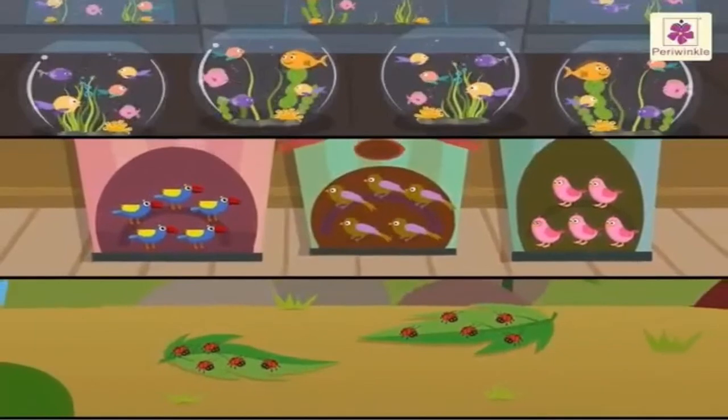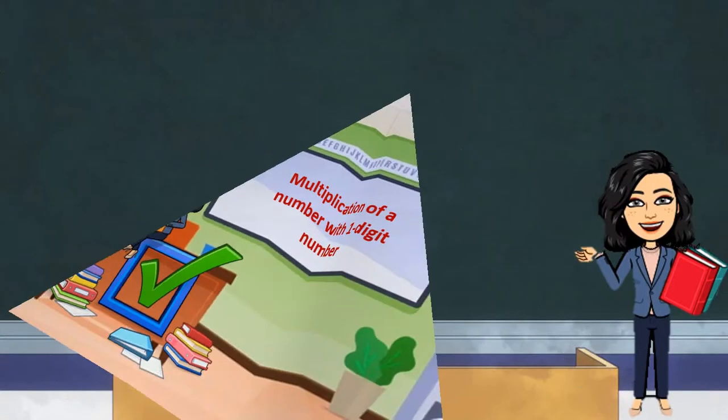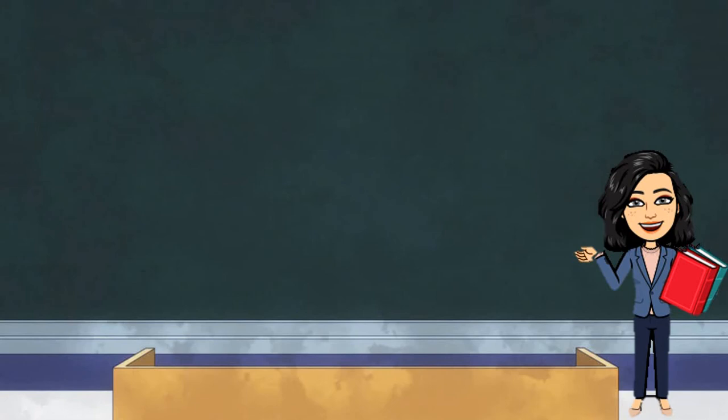Kids, let us now discuss how to multiply a number with one digit number. So, kids, the multiplication of a number with one digit number is given under exercise 3 which is on page number 39. And, today we are going to do question 1 of this exercise. Let us take a look on each part of it.